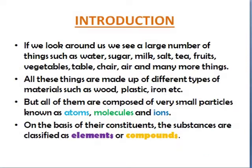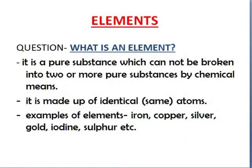If we look around us, we see a large number of things such as water, sugar, milk, salt, tea, fruits, vegetables and many more. All these things are made up of different types of materials such as wood, plastic, iron, metal etc. But all of them are composed of very small particles known as atoms, molecules and ions. On the basis of their constituents, or what they are made up of, the substances are classified as elements or compounds. So let us begin with the first topic, that is elements.